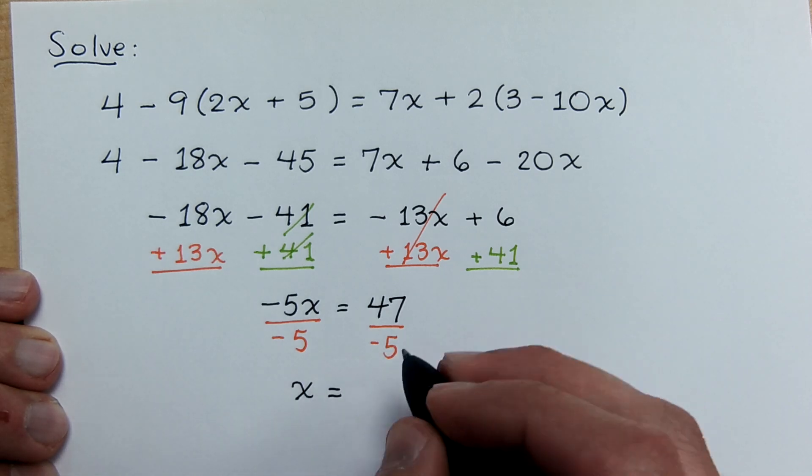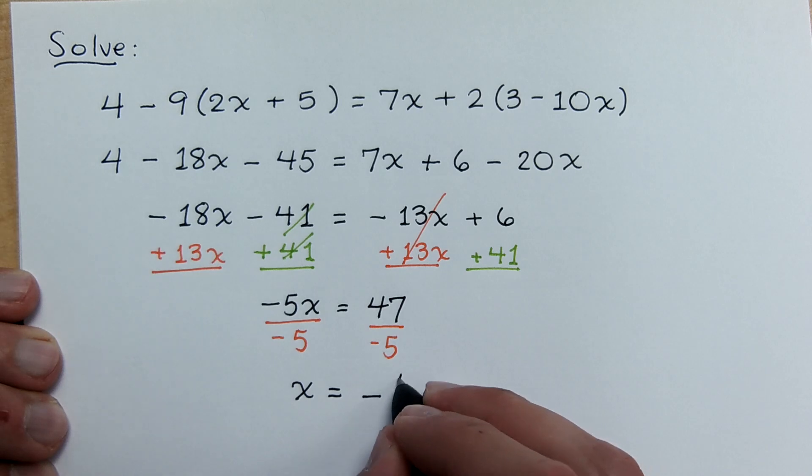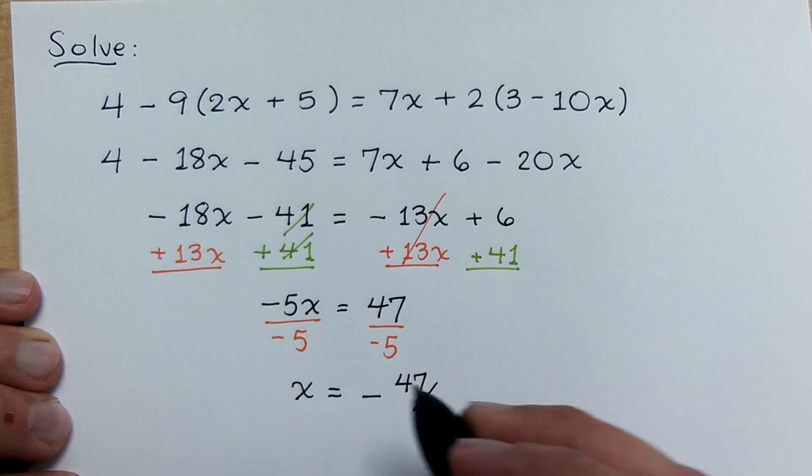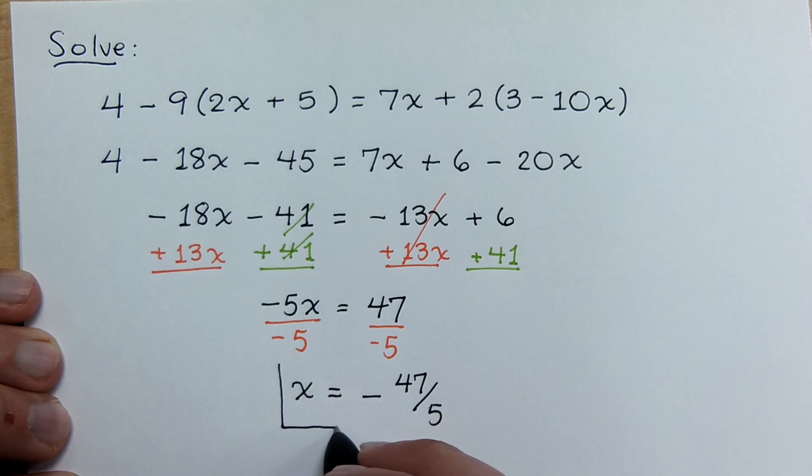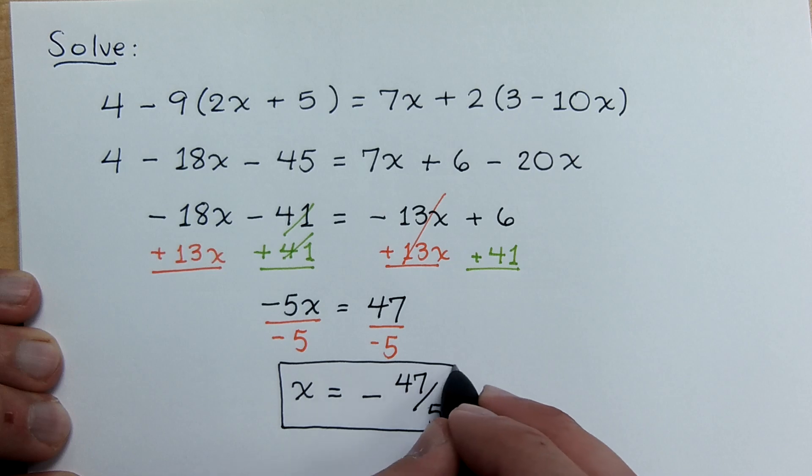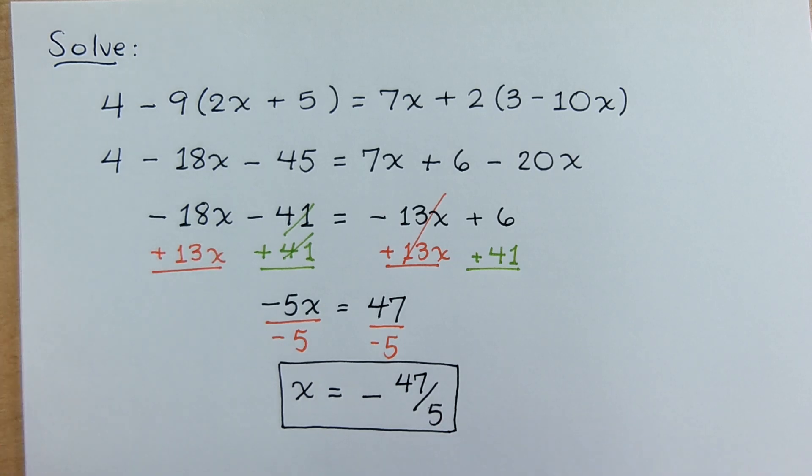Positive divided by a negative is a negative. So we'll say negative 47 over 5. Good. Are there any questions about that one?